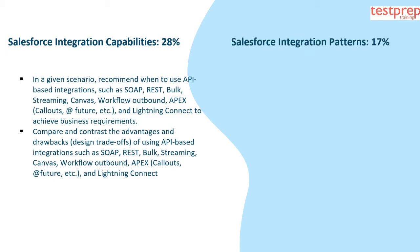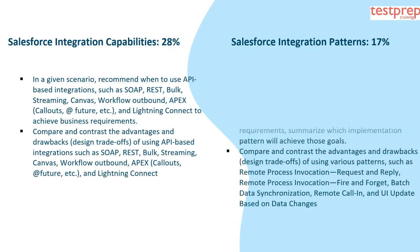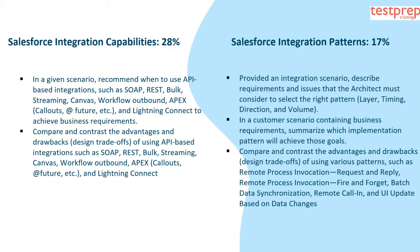Number 2, Salesforce Integration Patterns, 17%. It contains: first, provided an integration scenario, describe requirements and issues that the architect must consider to select the right pattern, layer, timing, direction, and volume. Second, in a customer scenario containing business requirements, summarize which implementation pattern will achieve those goals.